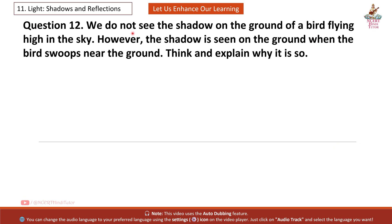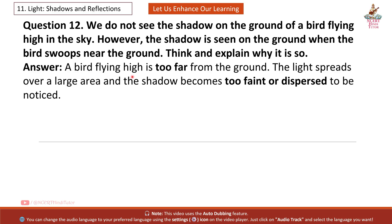Question 12: We do not see the shadow on the ground of a bird flying high in the sky. However, the shadow is seen on the ground when the bird swoops near the ground. Think and explain why it is so. Answer: A bird flying high is too far from the ground. The light spreads over a large area and the shadow becomes too faint or dispersed to be noticed. When the bird flies closer to the ground, the shadow is clearly visible.